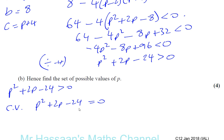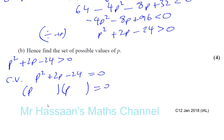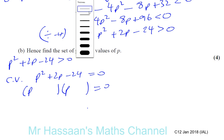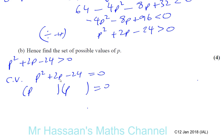We try to factorize. We need numbers that multiply to give negative 24 and add to give 2 — that's 6 and negative 4, since the positive must be the bigger number for a positive sum. So we get (p plus 6)(p minus 4) equals 0, giving the critical values p equals negative 6 and p equals 4.